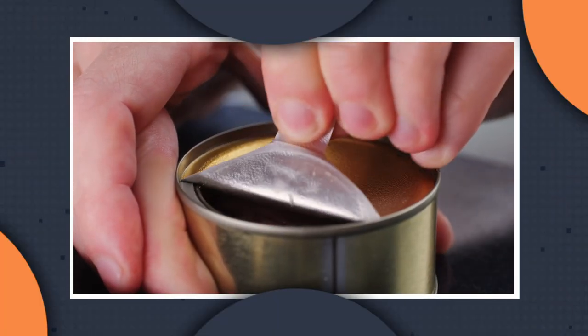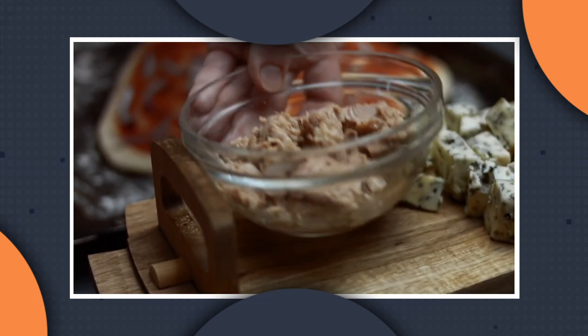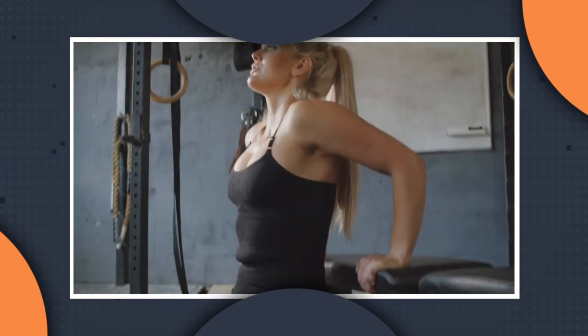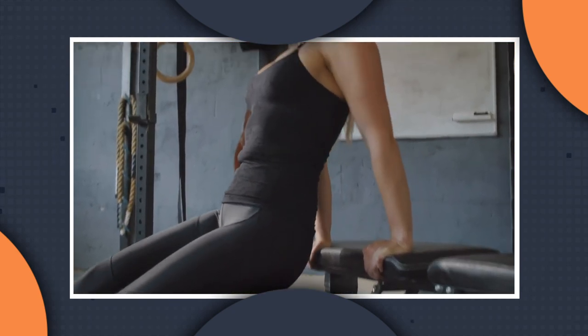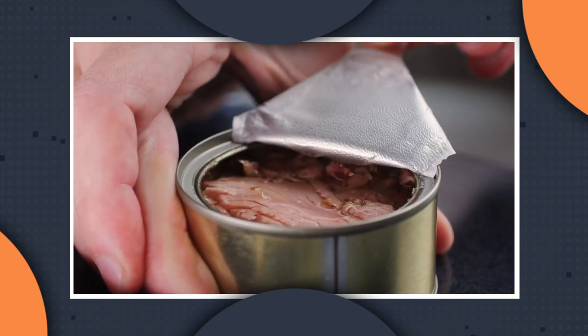But why settle for plain old tuna when you can spice things up with flavored tuna packets? Flavors like sweet and spicy are sure to tickle your taste buds, and with just 4 grams of combined fats and carbs, they are a healthy and low calorie way to get your protein fix. Simply open up a packet, scoop out the delicious tuna with a fork, and enjoy.